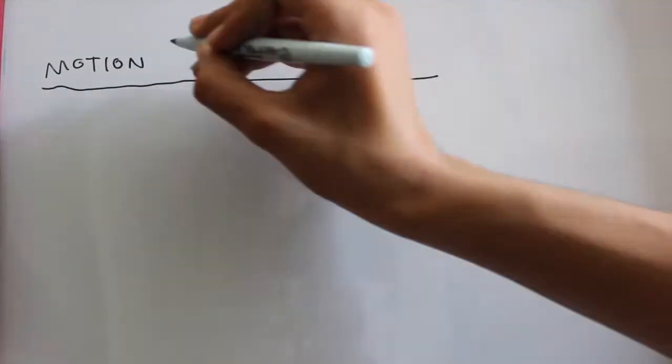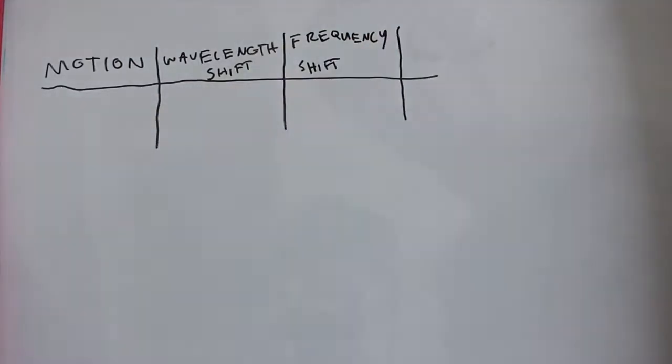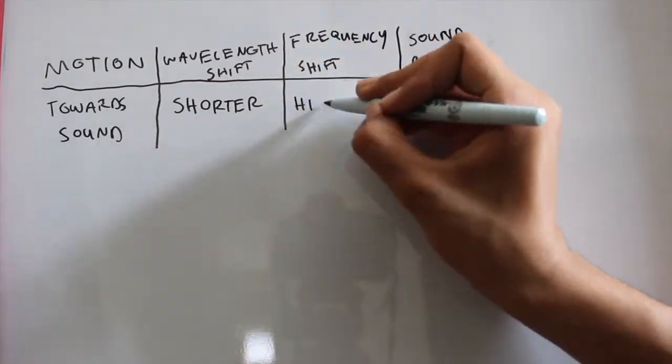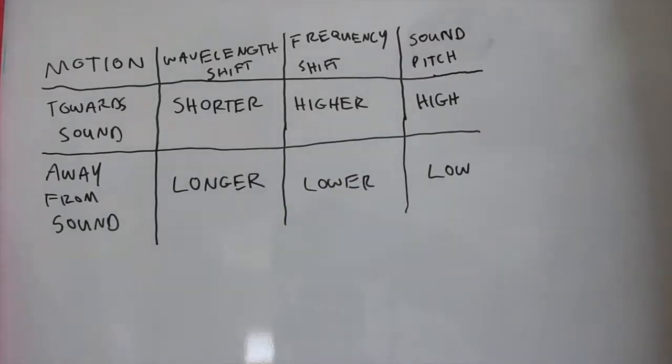So that's the Doppler effect for sound. Recapping: relative motion towards the sound equals a smaller wavelength, higher frequency, and thus a higher-pitched sound. And relative motion away from the sound equals a larger wavelength, lower frequency, and thus a lower-pitched sound.